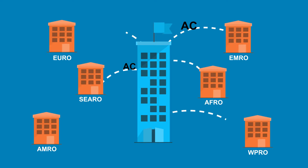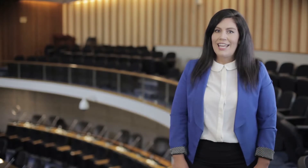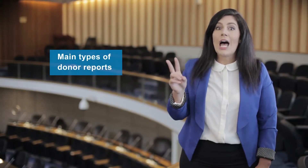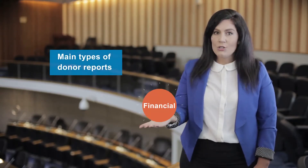All donor agreements for specified voluntary contributions require regular reporting on both financial implementation and technical activities. We also have a number of awards that do not require regular reporting, such as those flexible awards centrally managed by HQ, like assessed contributions. Generally, there are two main types of donor reports — financial and technical — both differing substantially in content and process.